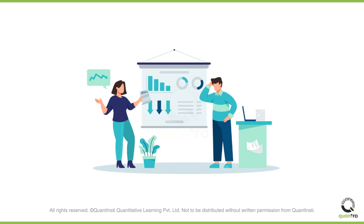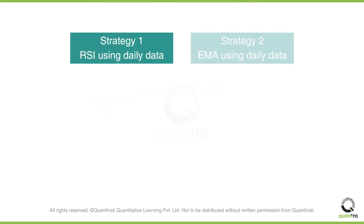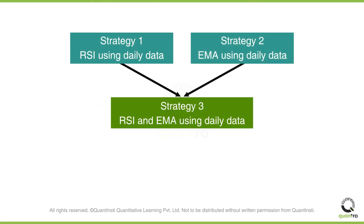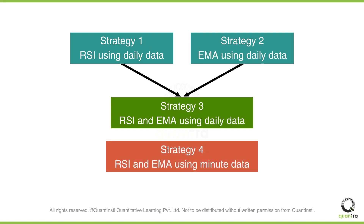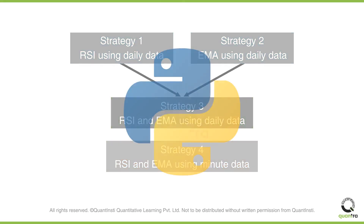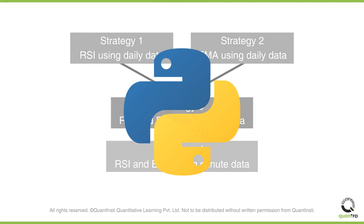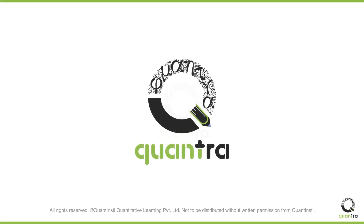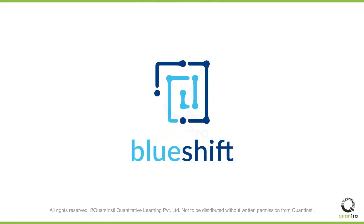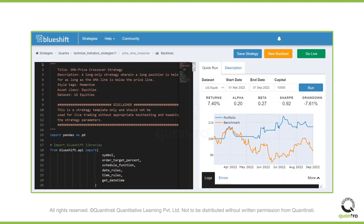You should analyze the performance of these strategies as well. You can combine different technical indicators and calculate them across different time frames — all easily done in Python. At Quantra, we believe in the application of trading ideas in real life.